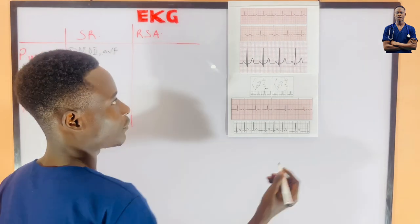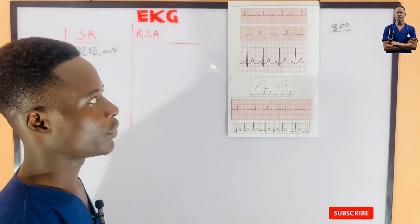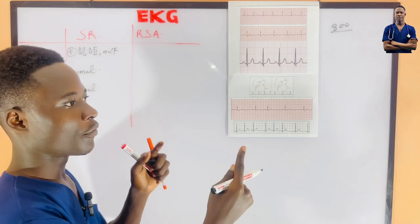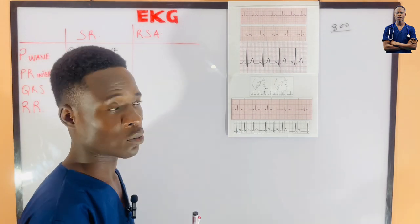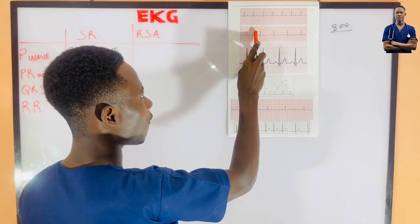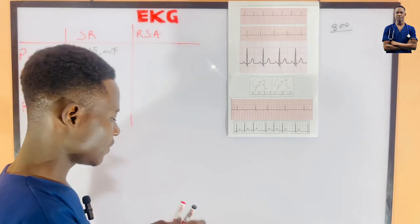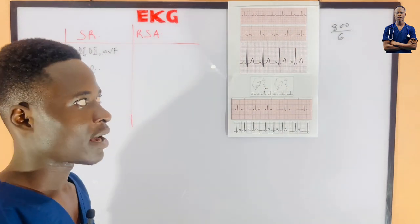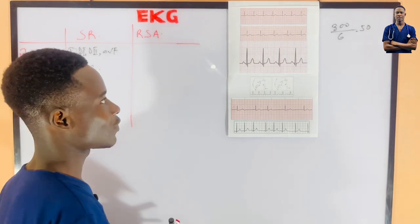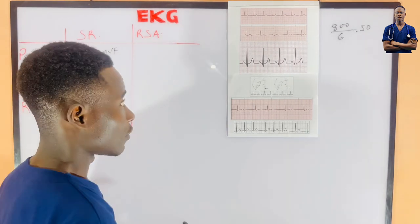To calculate the rate using big boxes, we divide 300 by the number of big boxes between one R wave and another R wave, when the rhythm is regular. Looking at this graph, from this R wave to this R wave we have 1, 2, 3, 4, 5, 6 — six big boxes. So 300 divided by 6 gives us 50 beats per minute. This gives us a bradycardia, so this graph represents bradycardia.